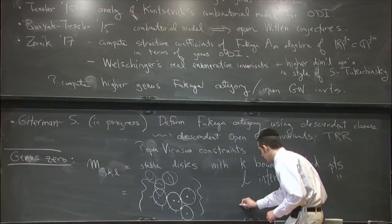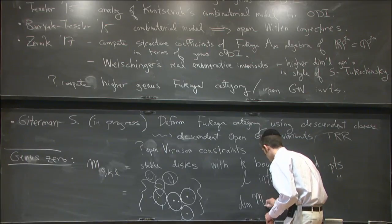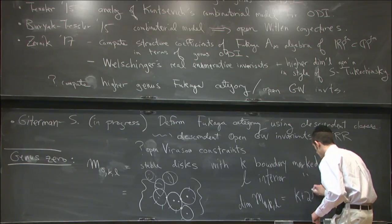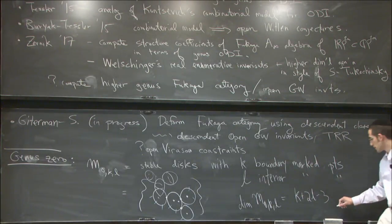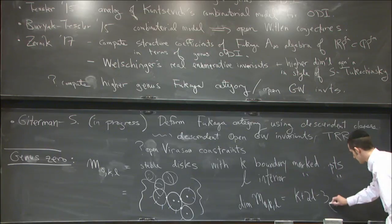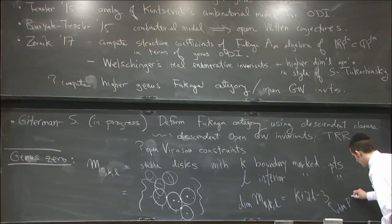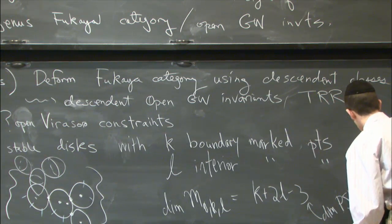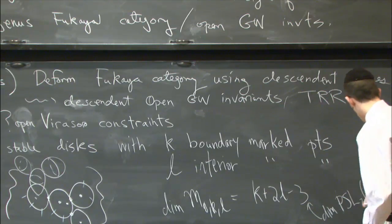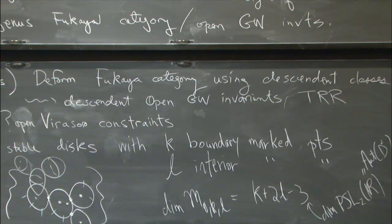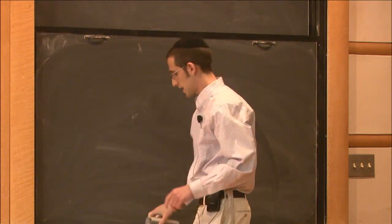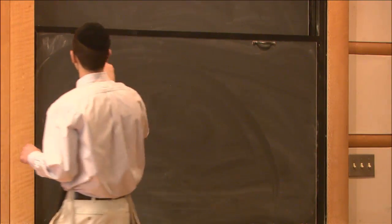The dimension of M_{0,K,L} is K + 2L − 3. This comes from the automorphism group of the disk — the dimension of PSL_2(R), which is the automorphisms of the disk. Over this space, you have some tautological line bundles.